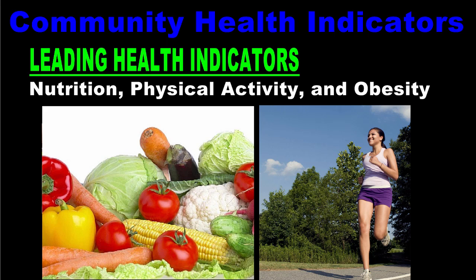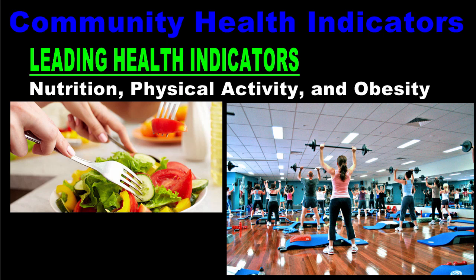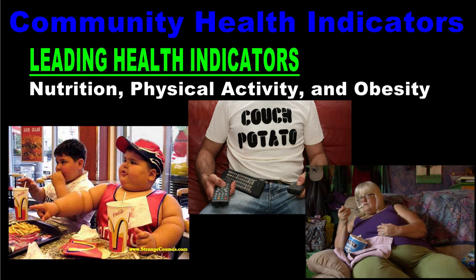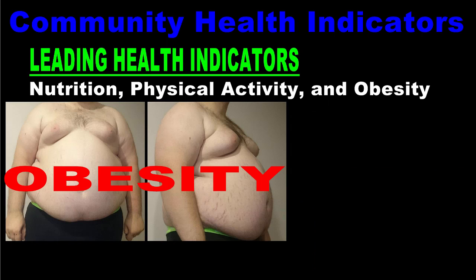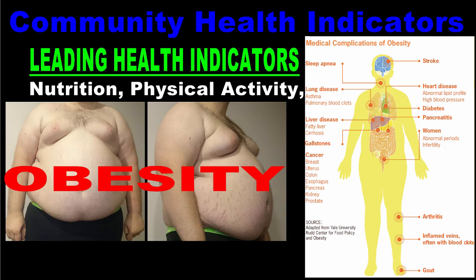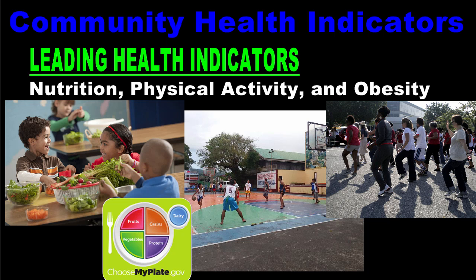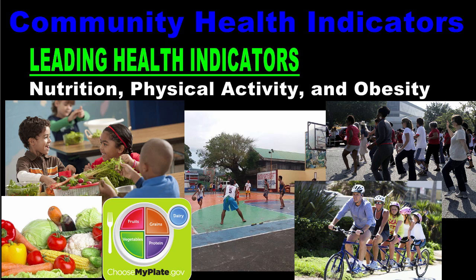Another leading health indicator, and probably the most obvious one, is nutrition, physical activity, and obesity. Consuming a healthful diet and getting enough exercise is arguably the most important thing one can do for overall good health and well-being. Unfortunately, most Americans do not eat a healthy diet or get enough physical activity, which has led to the obesity epidemic we see in our population today. Obesity is related to conditions like high blood pressure, high cholesterol, diabetes, heart disease, stroke, and osteoarthritis. Ensuring that all Americans participate in regular physical activity and consume a healthy diet would help decrease the incidence of obesity and help the population avoid these illnesses.